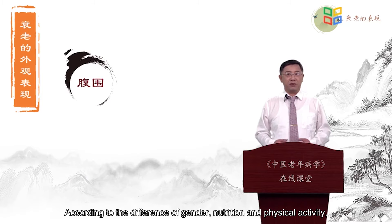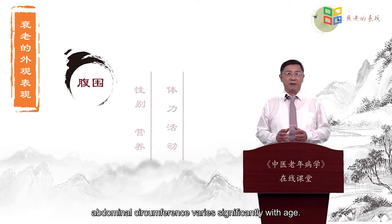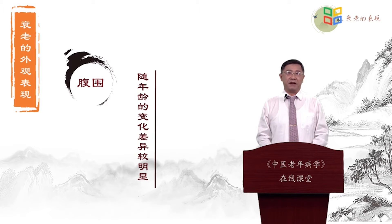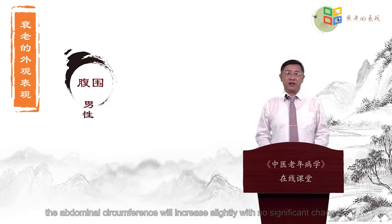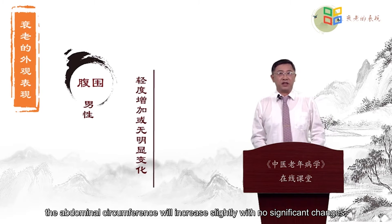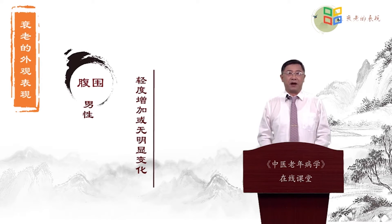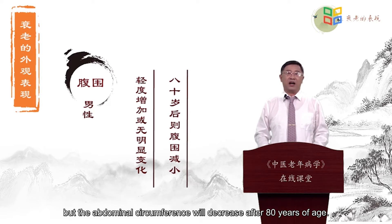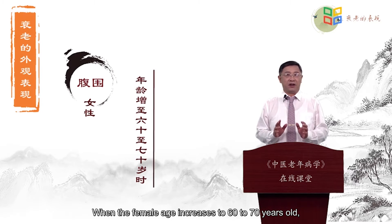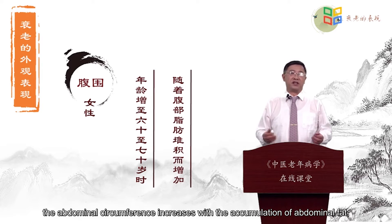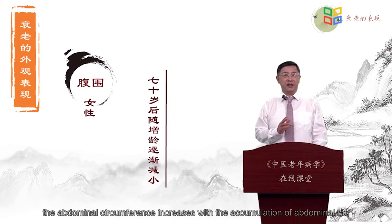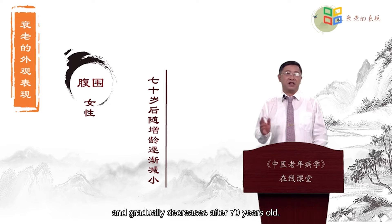According to gender, nutrition, and physical activity, abdominal circumference varies significantly with age. In men with less physical activity and over-nutrition, the abdominal circumference will increase slightly with no significant changes, but will decrease after 80 years of age. When females age to 60 to 70 years old, abdominal circumference increases with accumulation of abdominal fat, and gradually decreases after 70 years old.